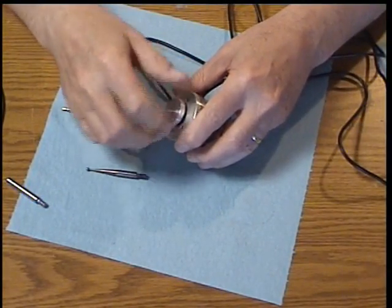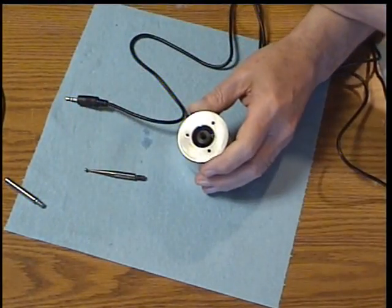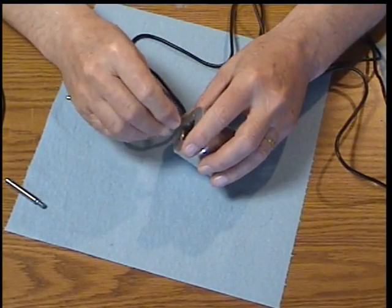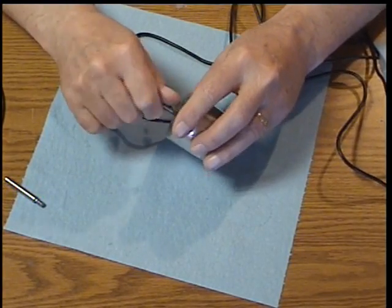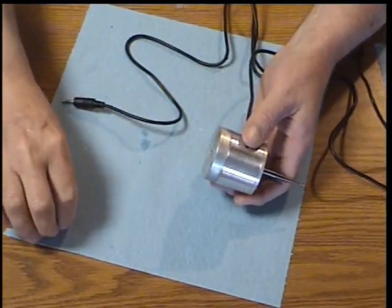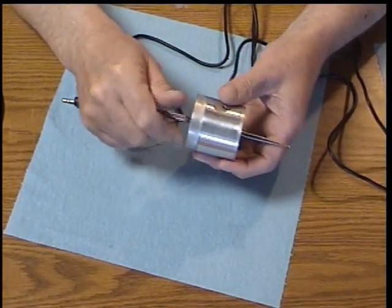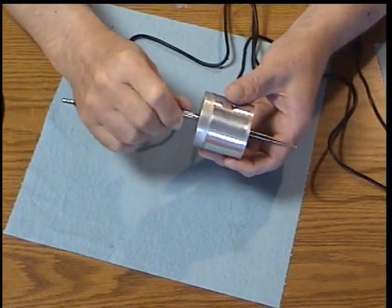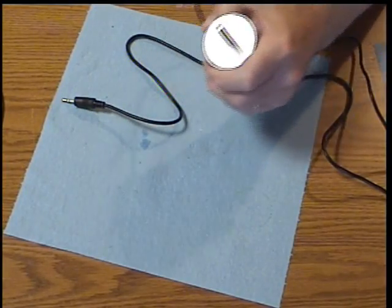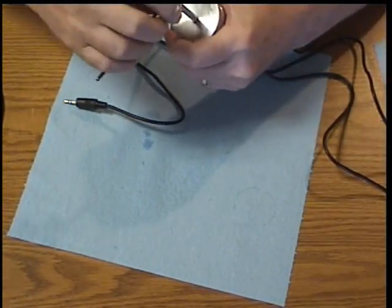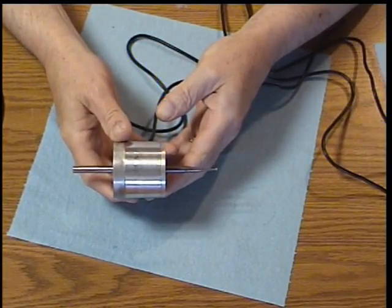Back to the probe. Unscrew, screw the probe tip back in, screw the spindle shaft back in, unscrew, and there we have the probe assembled again.